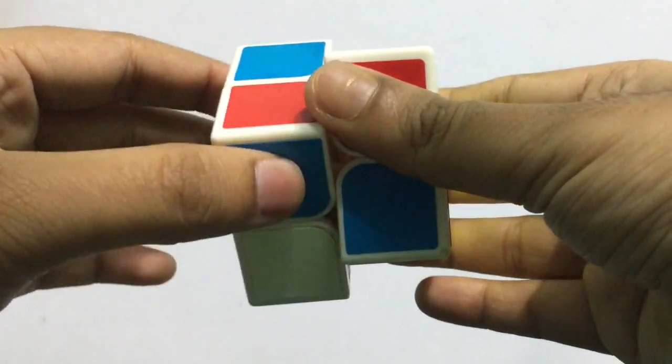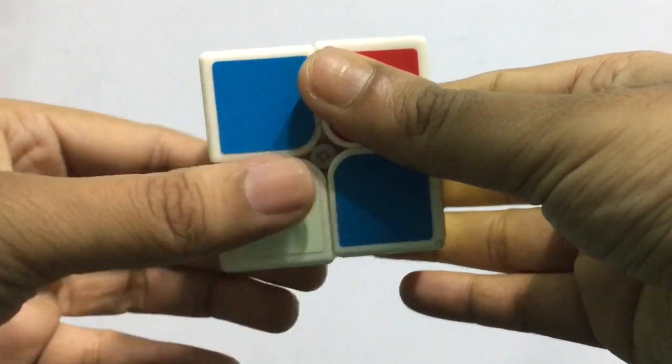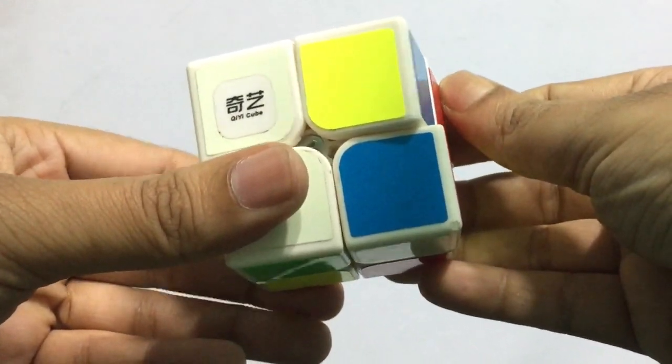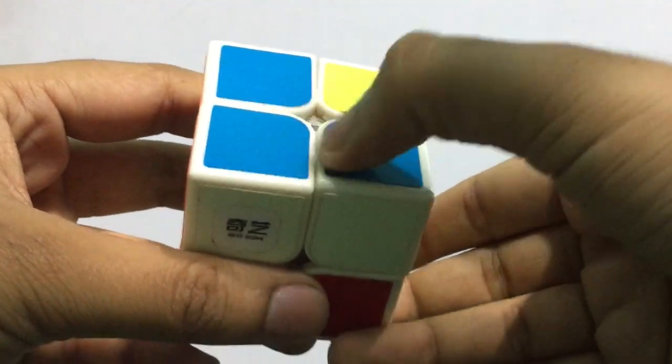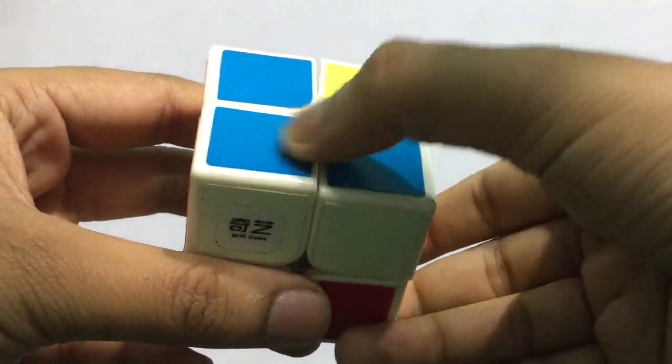Now make a move like this: front, upside, and back. So these white pieces get attached.